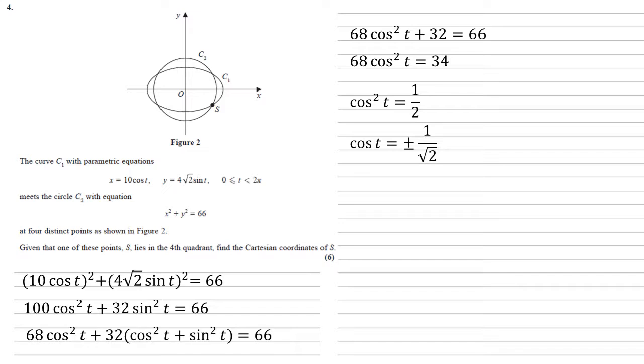We now need to find x because we want the Cartesian coordinates. Well, we know x in terms of cos from our parametric equations, x equals 10 cos t. We also know from the diagram that x must be positive. It's in the fourth quadrant, so we're going to take the positive answer, 1 over root 2.